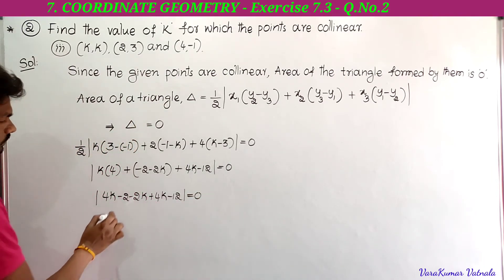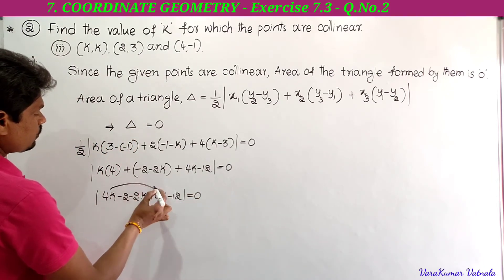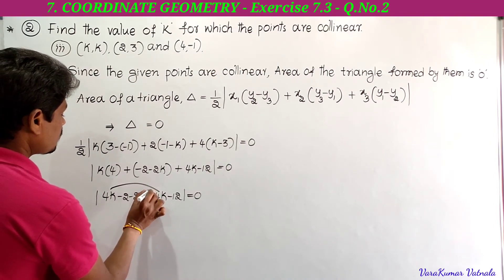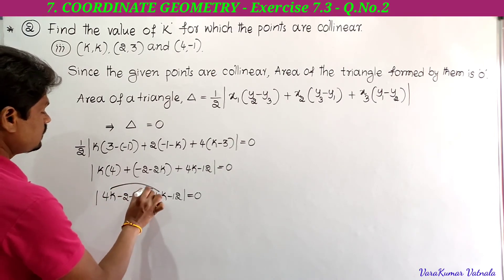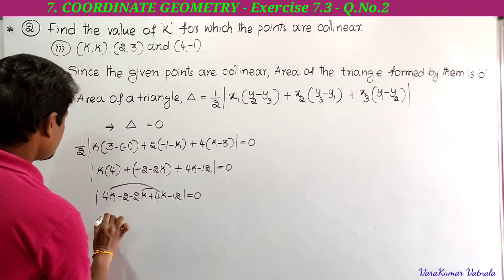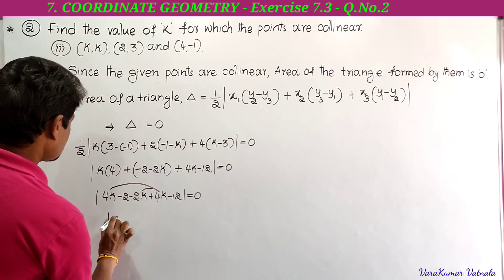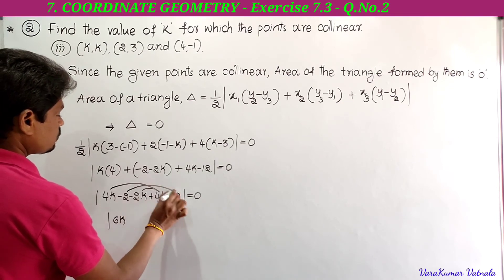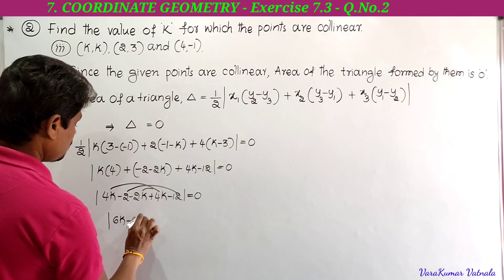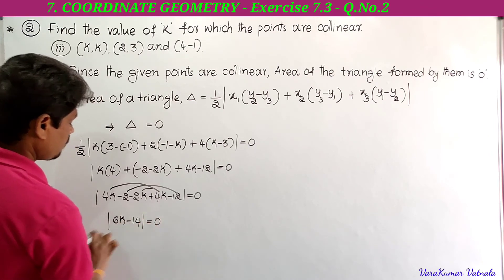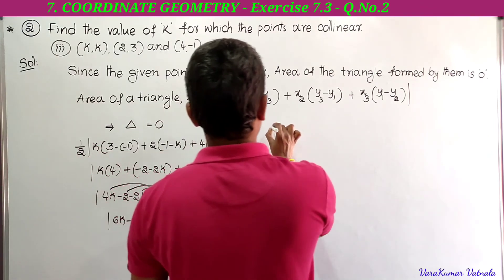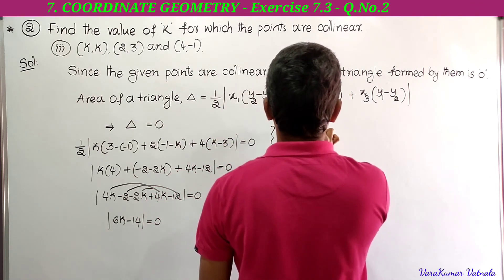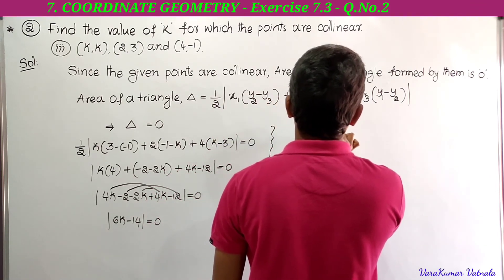Combining k terms: 4k + 4k is 8k, then 8k - 2k is 6k. Combining constants: -2 - 12 is -14. So 6k - 14 = 0. Removing the modulus, we get 6k - 14 = 0.